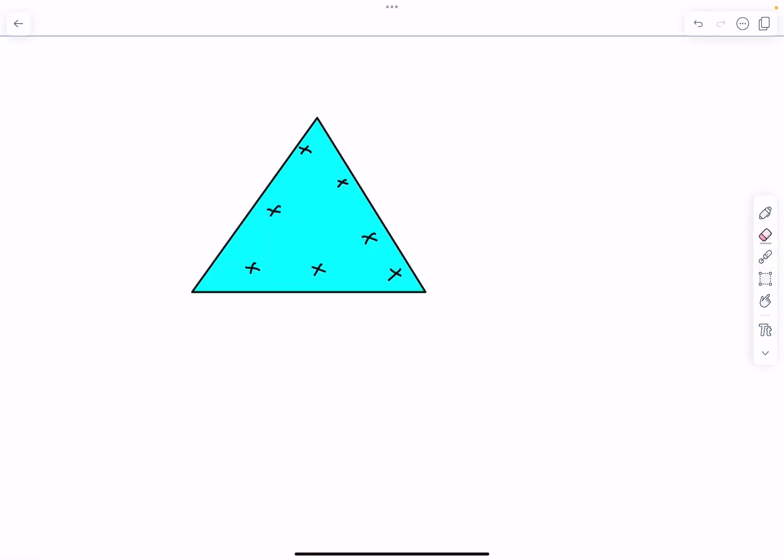Okay, so in this question the magnetic field is given to be into the plane and it is increasing in magnitude. So dB/dt in this question is given to be B0. Now we know that the changing magnetic fields produce an induced electric field.